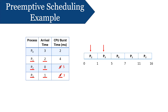As P3 is executing, P1 arrives at time two. The remaining time for P3 is three milliseconds, which is less than the time required by P1 and P2 at five milliseconds, so P3 is allowed to continue. While P3 is executing, P0 arrives at time three. The remaining time for P3 is two milliseconds, which equals the time required by P0, so P3 continues. After P3 terminates, CPU is allocated to P1, and then to P2.